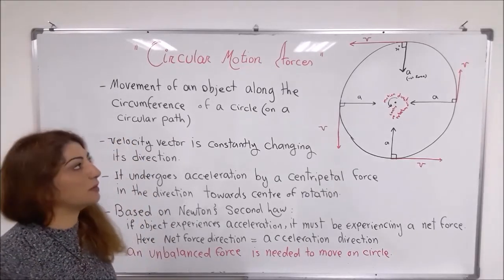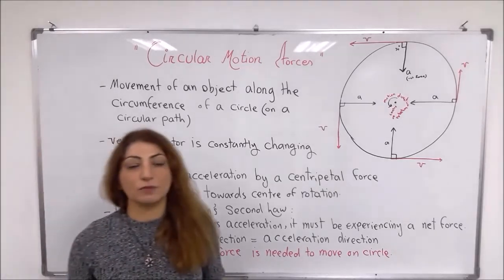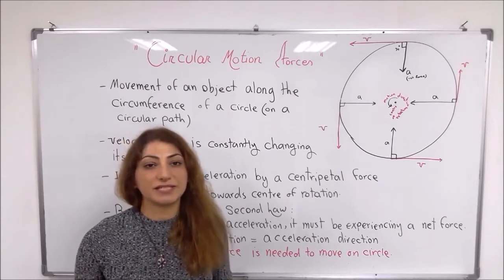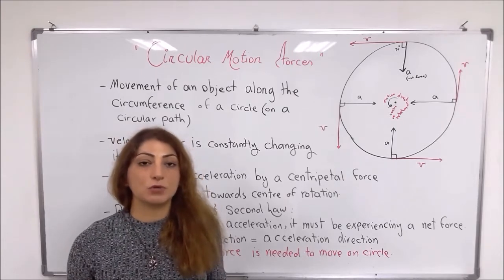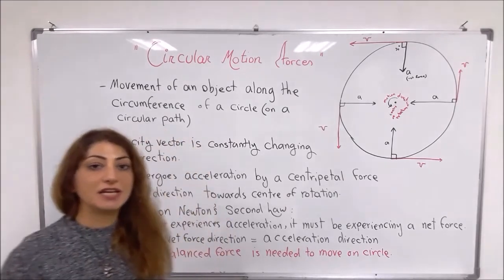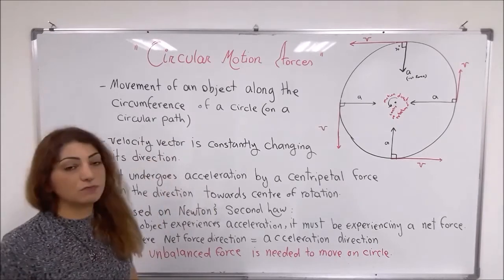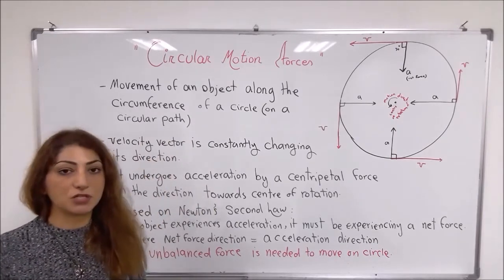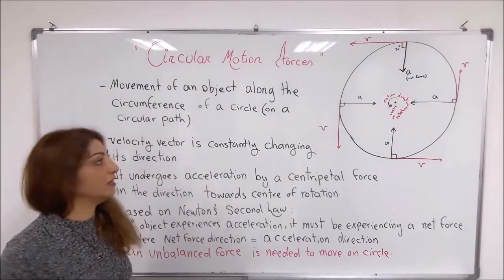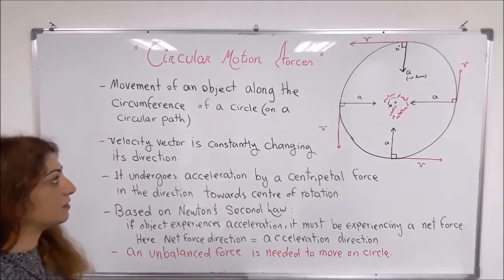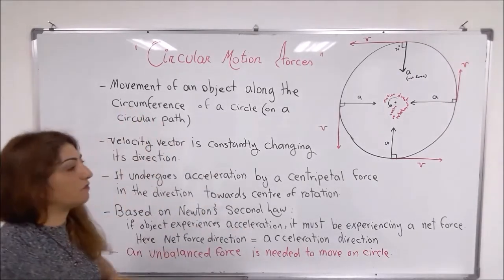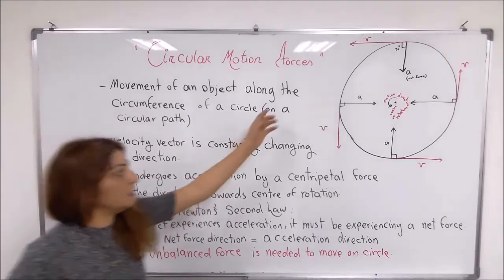Today I want to talk about the circular motion. Let's see what a circular motion is. A circular motion is a motion, or the movement of objects moving on a circular path, on a rounded path, and along the circumference of a circle.